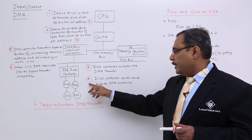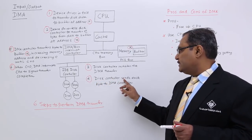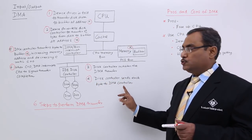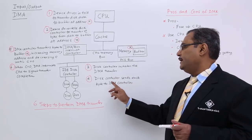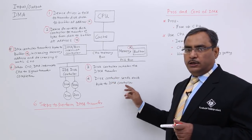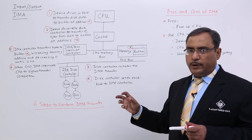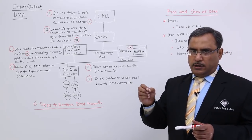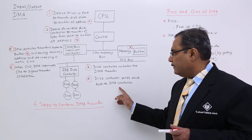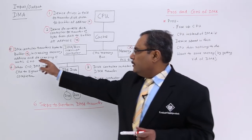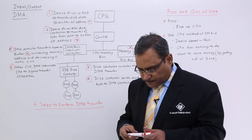Point number 4, disk controller sends each byte to the DMA controller. The disk controller will send each byte to the DMA controller. Disk controller is nothing but hardware. It will send the bytes to the DMA controller directly. DMA controller transfers.